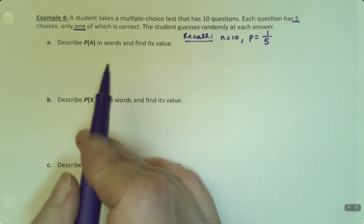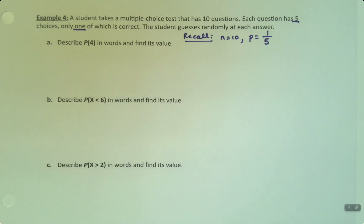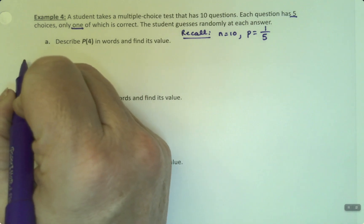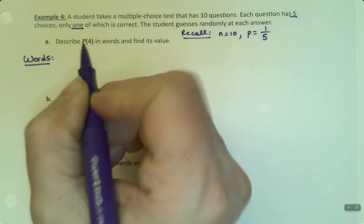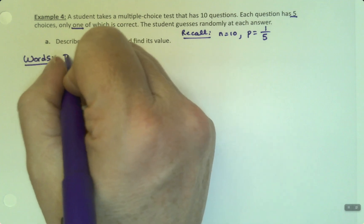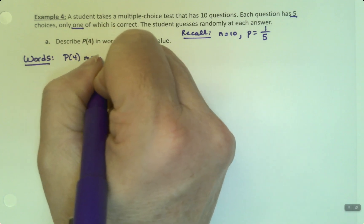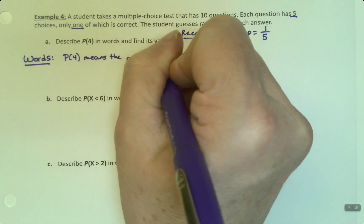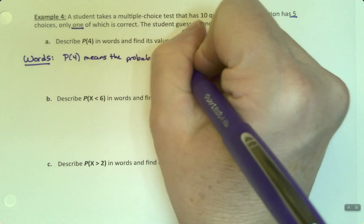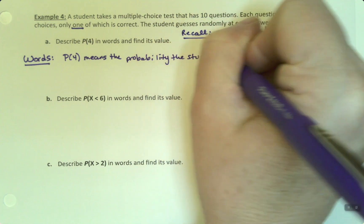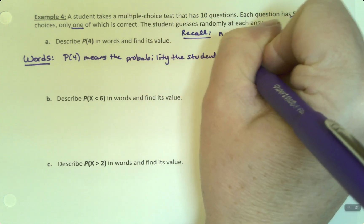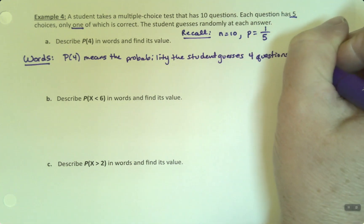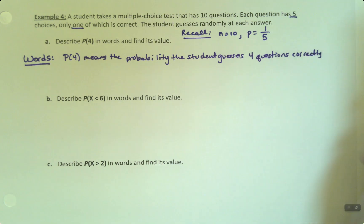Let's describe P of 4 in words and find its value. P of 4 means the probability the student guesses four questions correctly out of 10.